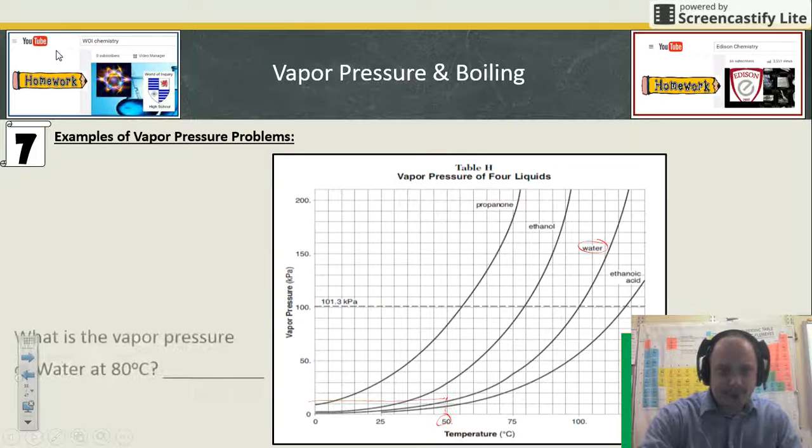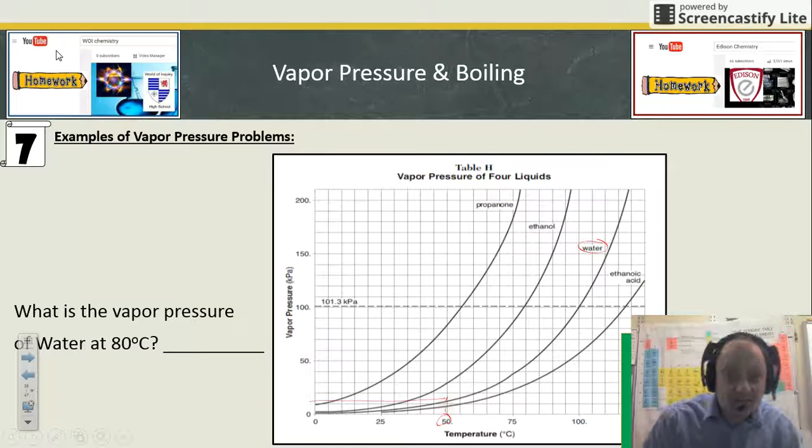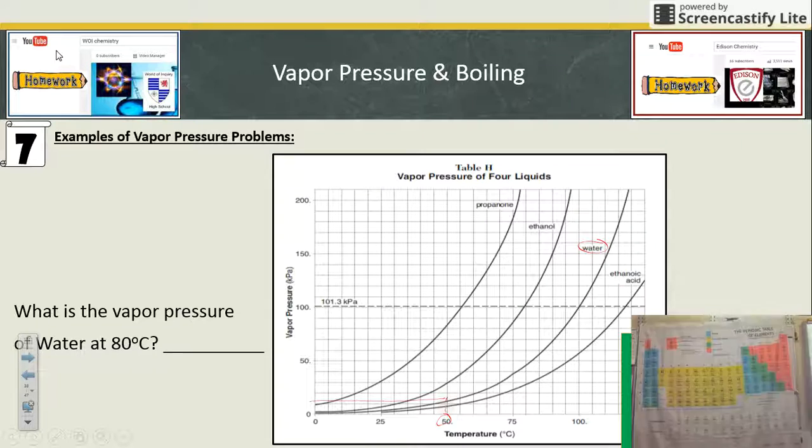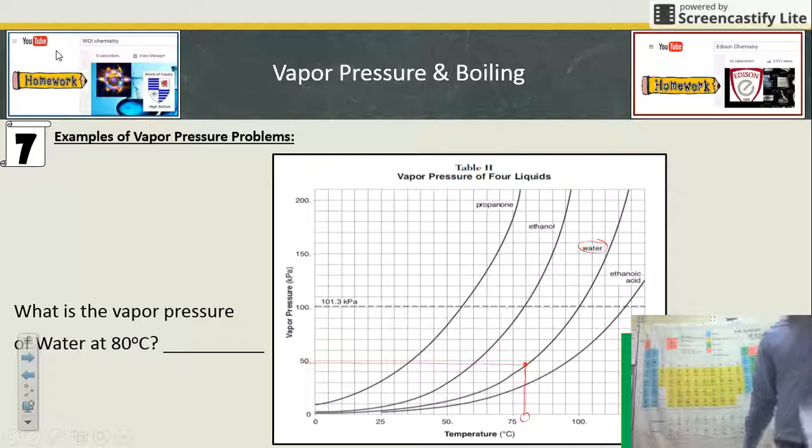Another type of question: What's the vapor pressure of water at 80? Same thing—graph reading problem. You go to 80 degrees. 80 is right here. You read up till you hit the water line, you read over, and you determine your value. I think it's not quite 50, a little bit less—maybe 47, 48 kilopascals.